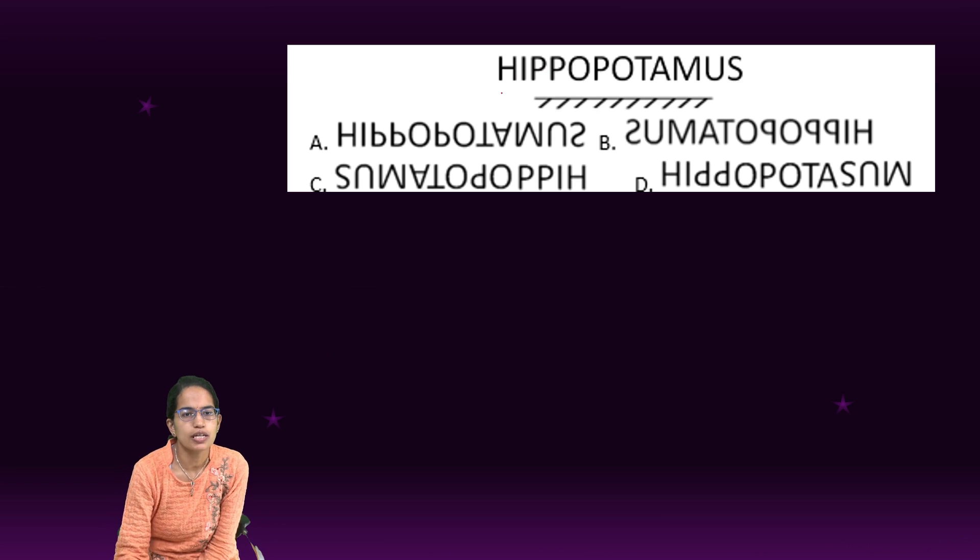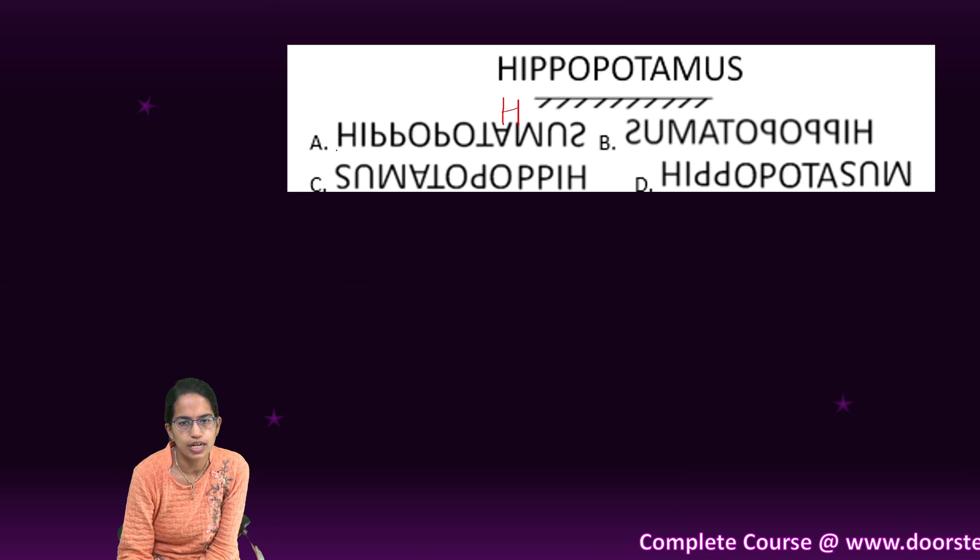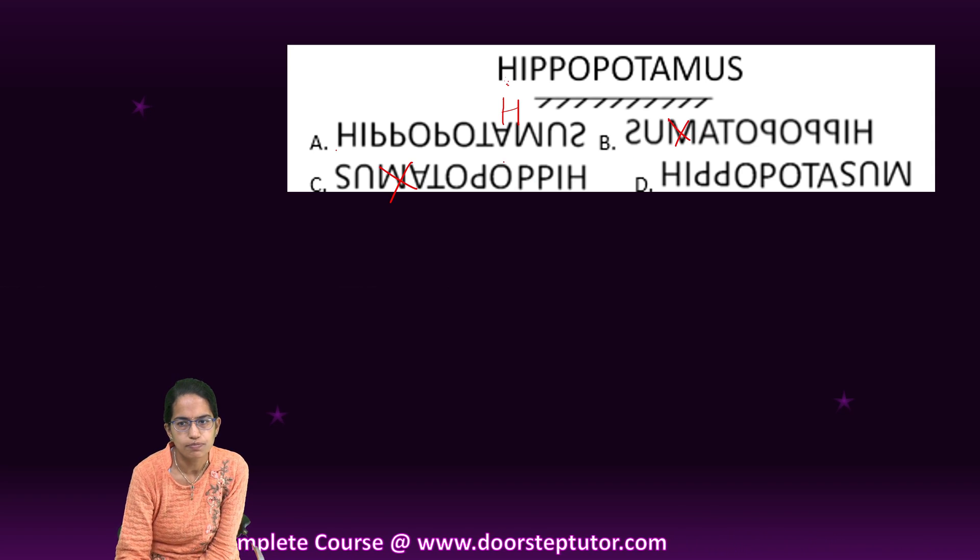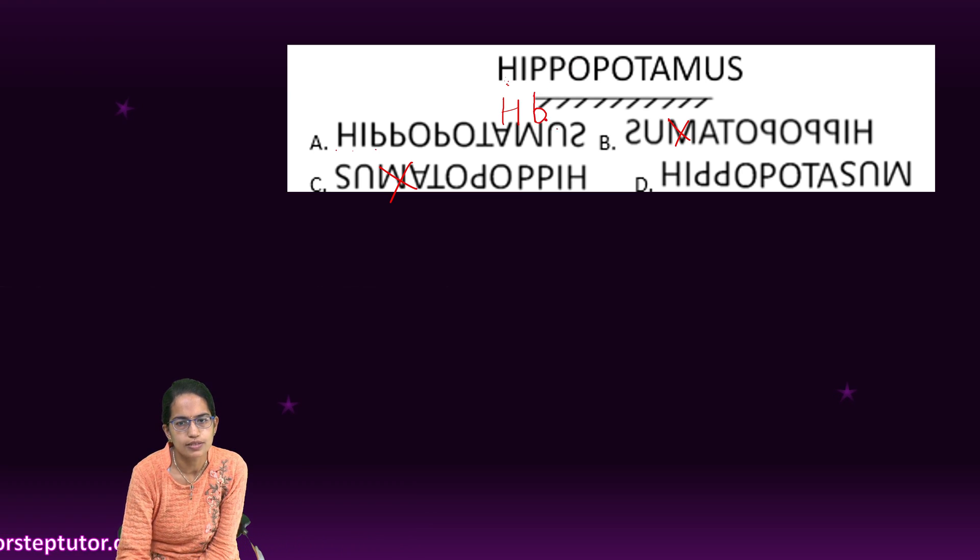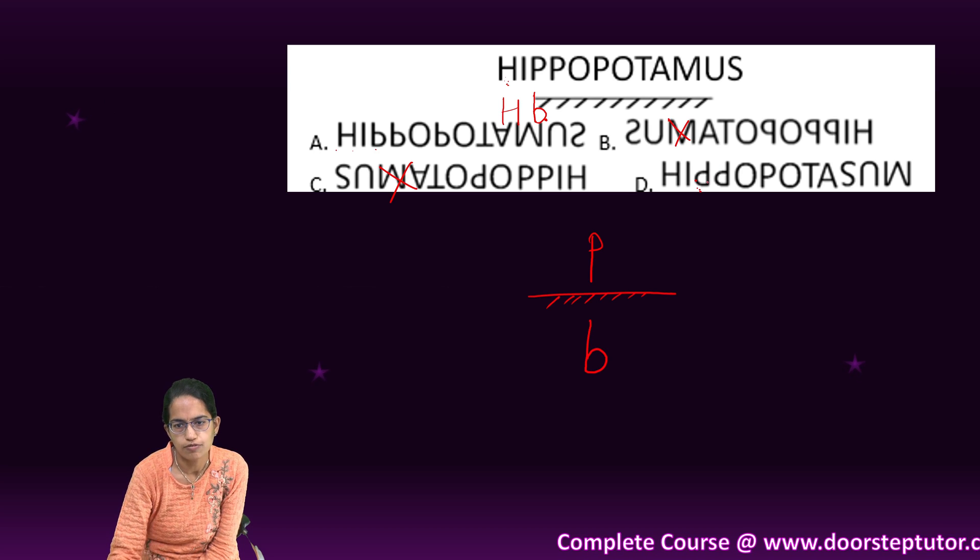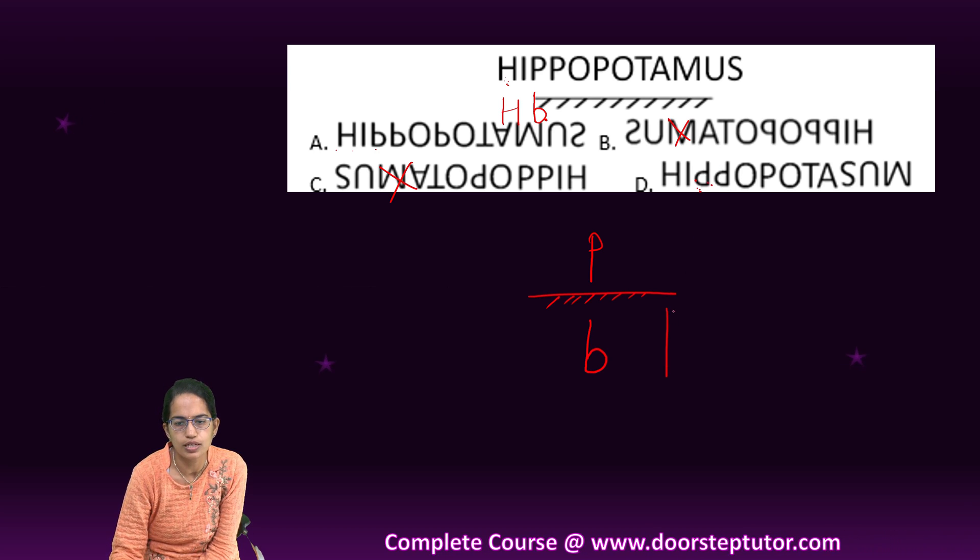So here HIPPOPOTAMUS. So H remains like this, so it would always start with H, so these two choices are incorrect. The word would remain the same. So it would start with H, I, and then P would be like this. So P won't be like this. Now this is the what? So P, I am taking the water image of P. The water image of P is this.